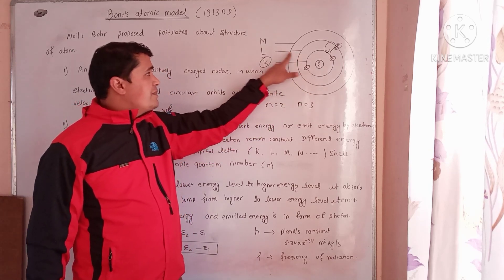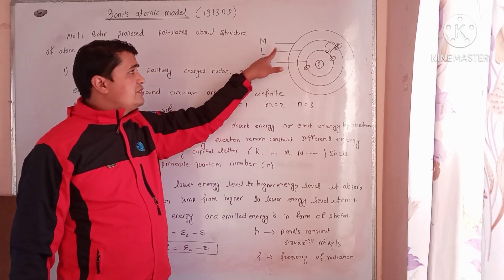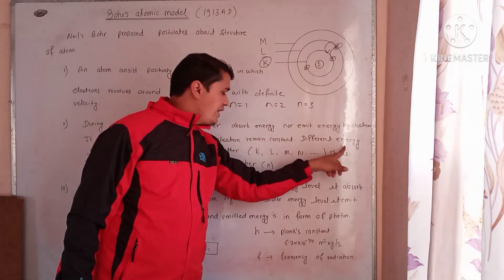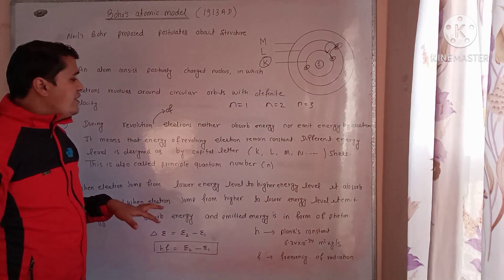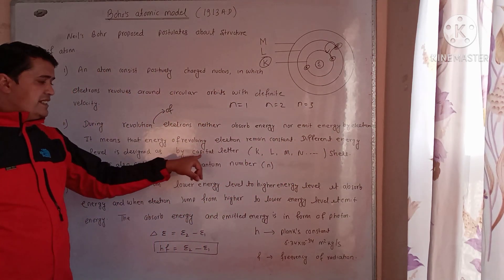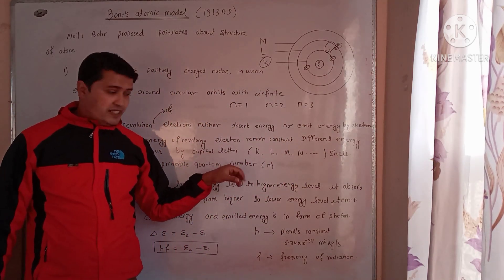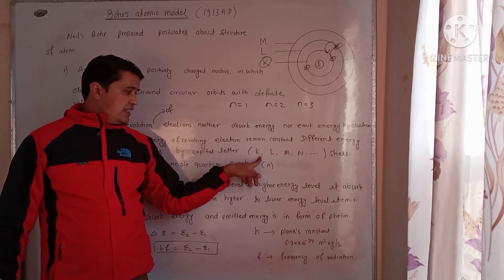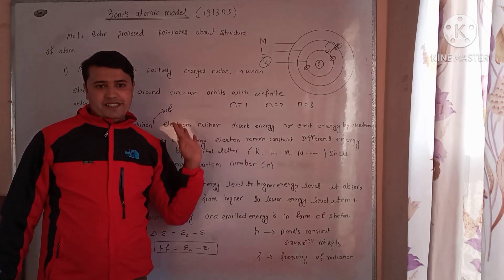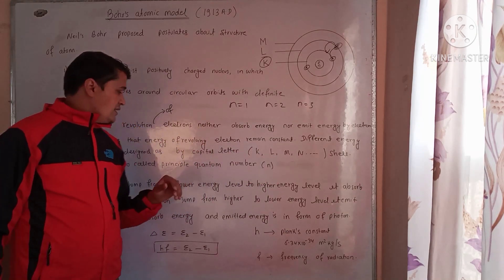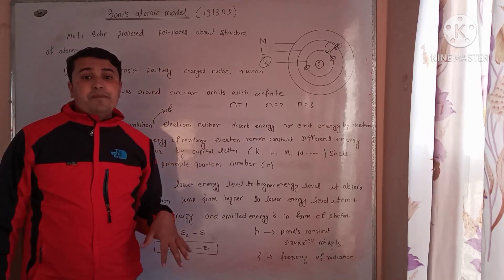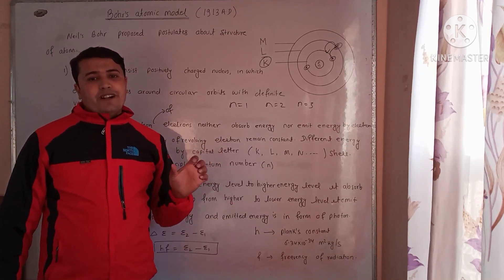The different energy levels are designated as capital letters: K shell, L shell, M shell, and N shell. This is also known as the principal quantum number.